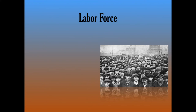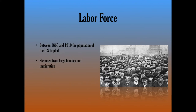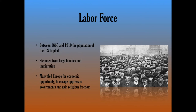Between 1860 and 1910, the population of the United States tripled. This was due predominantly to two things: we were still having large families back then, and we had another wave of immigration from Asia and from Southern and Central Europe. Many immigrants were fleeing Europe for greater economic opportunity, to escape oppressive governments, and to gain greater religious freedom — much like the colonial period, when Europeans came over for similar economic and religious reasons.